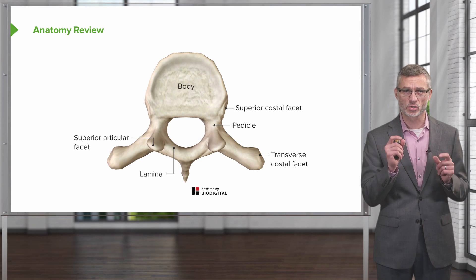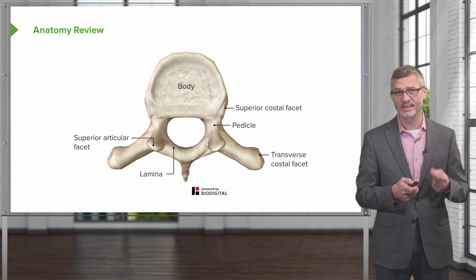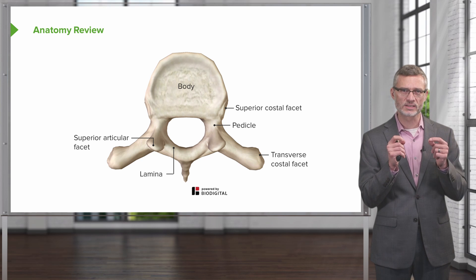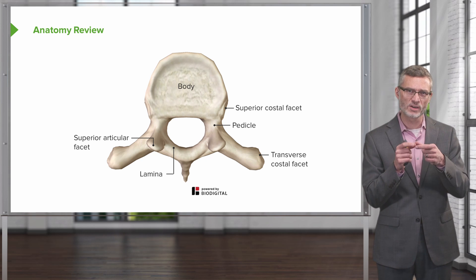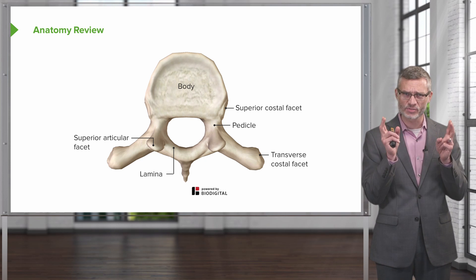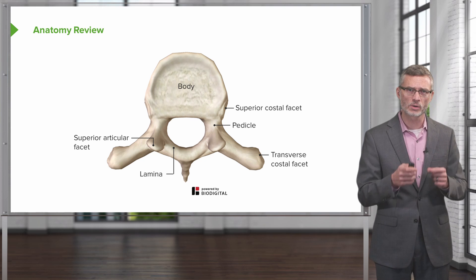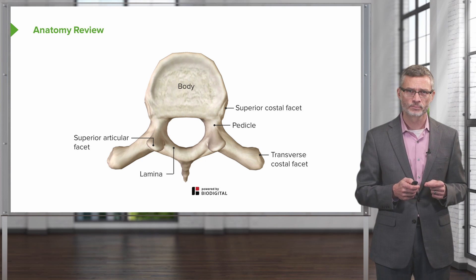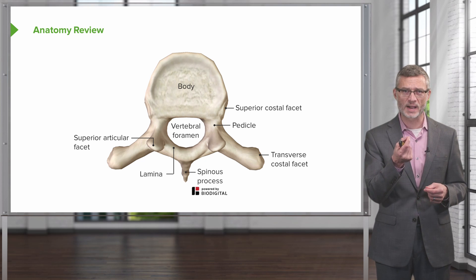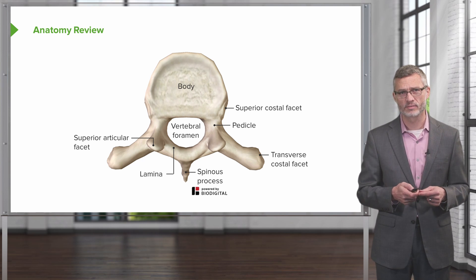Looking at a single vertebral body: on top of the body shown in this image would be an intervertebral disc. You'll also note that there are facets — the articulations between one vertebral body and the vertebral body above and below it. While we don't typically think about arthritis of the vertebral bodies, the arthritis is actually occurring at the facets themselves. In the center is the vertebral foramen, also called the spinal canal. Take note of the spinous process — that's the most prominent palpable part of the vertebral body on the back of the spine.